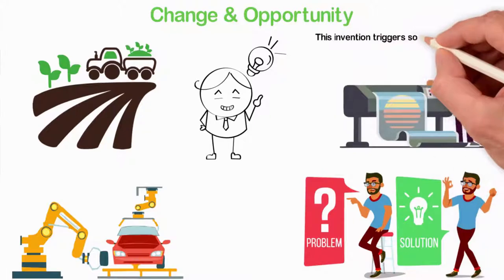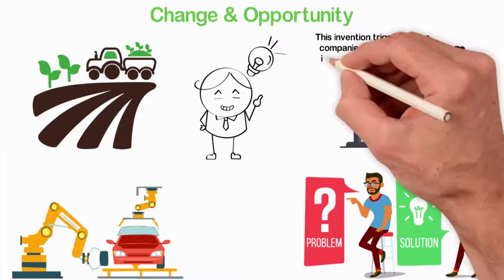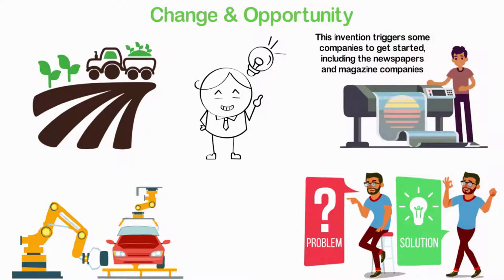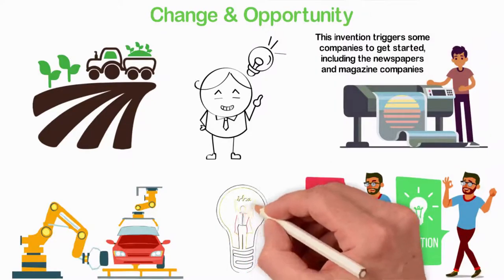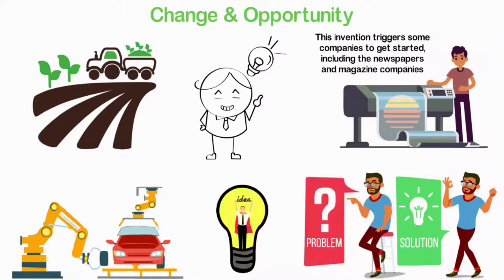Several companies got started, including the newspapers and magazine companies. Some smart individuals became rich by positioning themselves to take the chance of the opportunity while everyone else complained and made excuses.